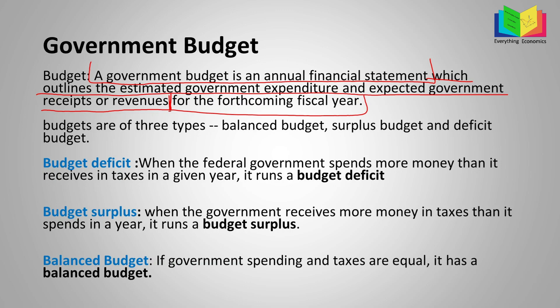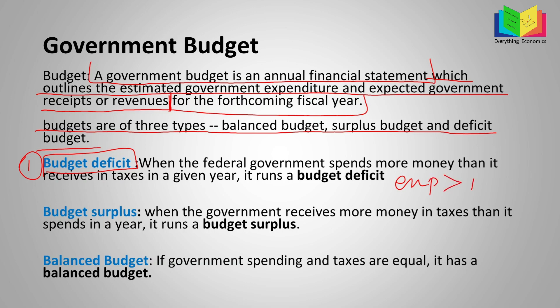Now let's move on to the types of budgets. Budgets are of three types: balanced budget, surplus budget, and deficit budget. First, budget deficit — what is a budget deficit? When the federal government spends more money than it receives in taxes in a given year, it runs a budget deficit. It simply means that when government expenditures are greater than their revenue, there is a budget deficit, and the government will have to borrow money in that case.